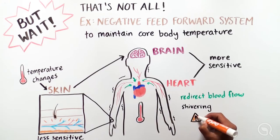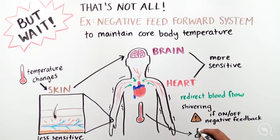If our body only used on-off negative feedback, then our core body temperature would reach dangerous levels before the body was able to fix it.